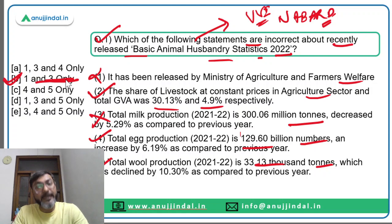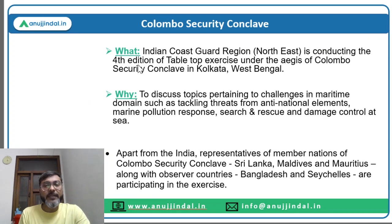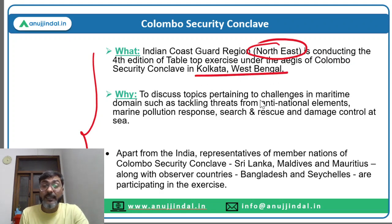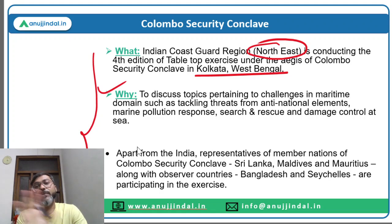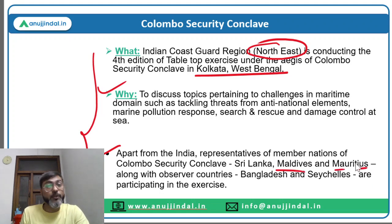Question two: where is Indian Coast Guard Region Northeast conducting the fourth edition of the tabletop exercise under the aegis of the Colombo Security Conclave? The exercise was held in Kolkata, West Bengal. The objective was to discuss maritime security challenges including tackling threats from anti-national elements, marine pollution response, search and rescue, and damage control at sea. Apart from India, participants included Colombo Security Conclave members Sri Lanka, Maldives and Mauritius, with Bangladesh and Seychelles as observers.